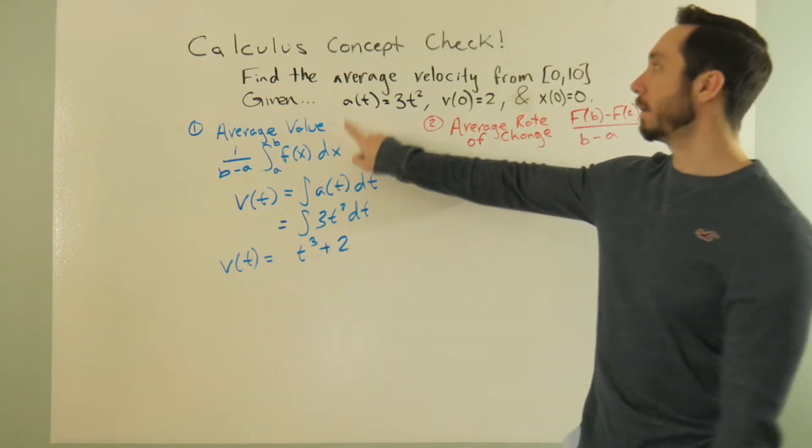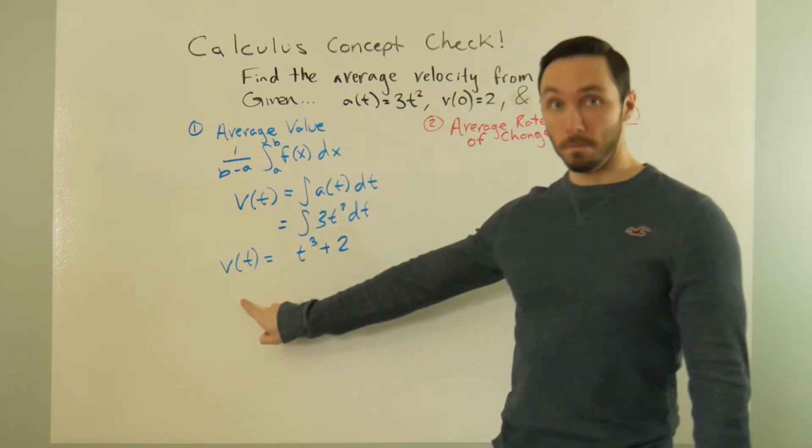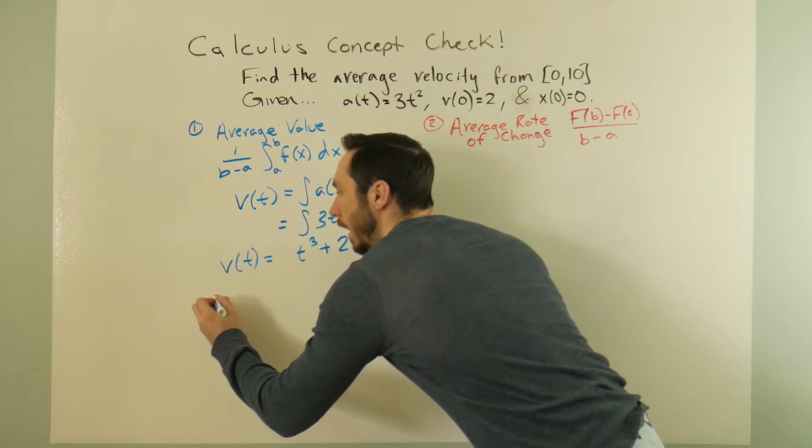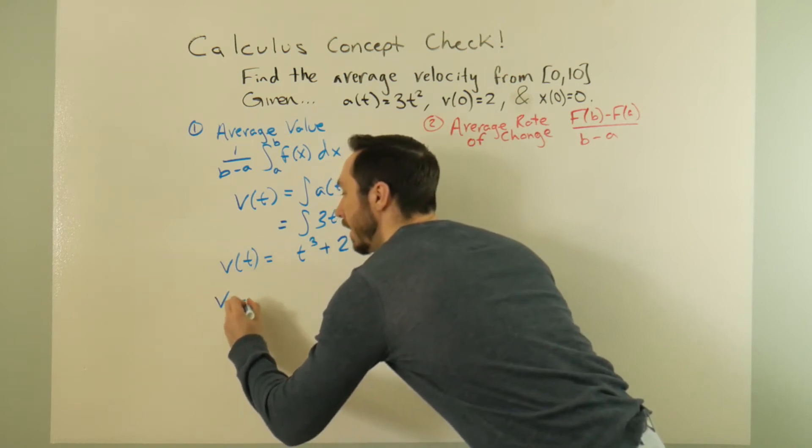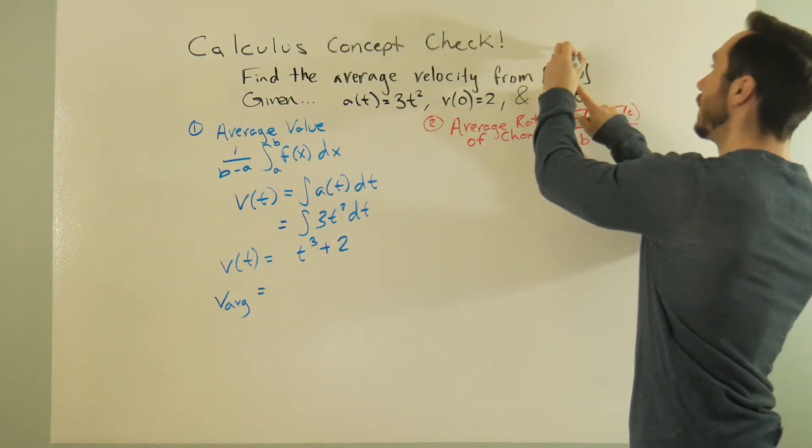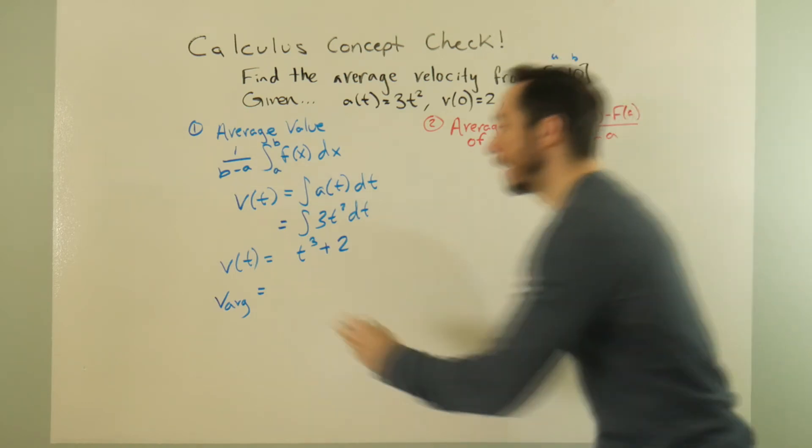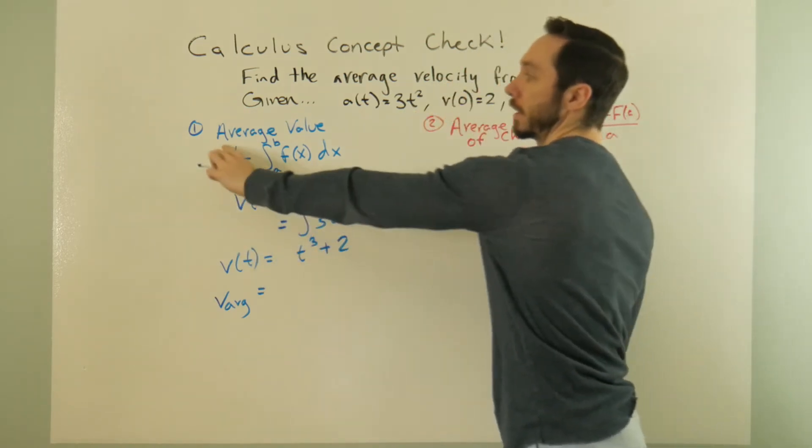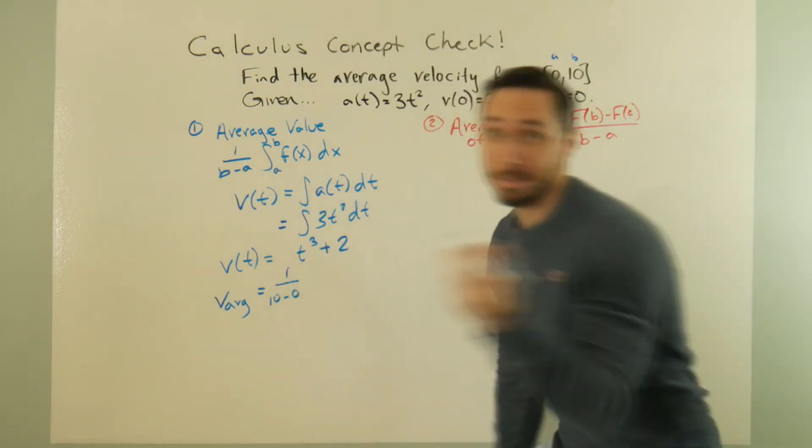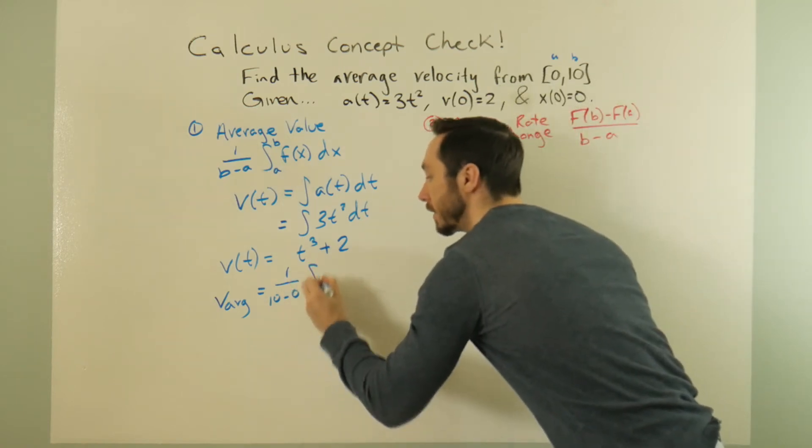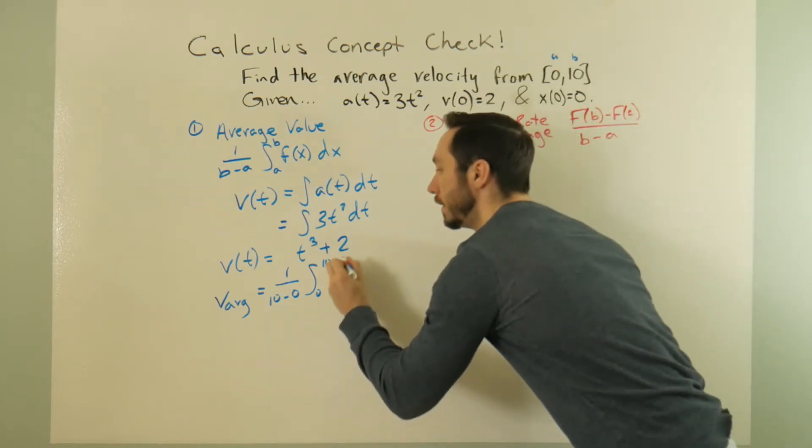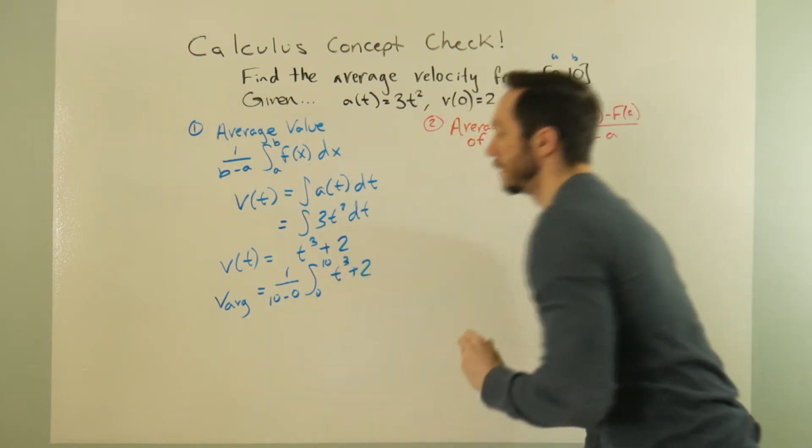If I want to use average value, I want to find average velocity. I want to use average value with my velocity function. So what I'll be doing then to find the average value, maybe I'd write v sub average. So I want to go from a to b. Maybe my a value is 0, my b value is 10. I'm going to integrate this. Well, first off, I have this kind of leading coefficient here, 1 over b minus a. Here, it'll be 1 over 10 minus 0, so that's just a 10th. And then we're going to integrate this from 0 to 10. It's a function t cubed plus 2 dt.